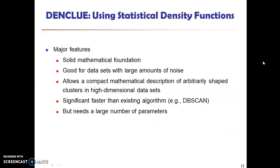We can take this cluster — there we have a limited number of data points. Comparatively, we have a high-density cluster that has more data points. Here we have more number of data points, so comparatively this is high density. The clusters can be formed based on the density of the data points.